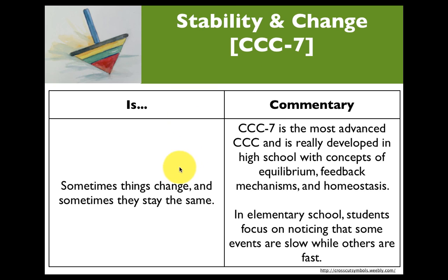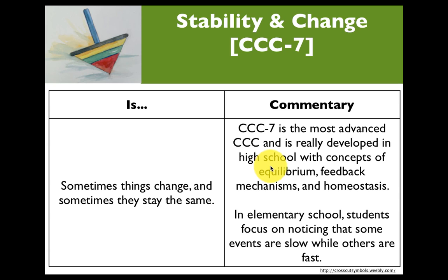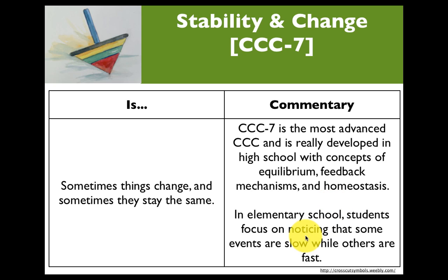Stability and change really boils down to: sometimes things change, and sometimes they stay the same. This cross-cutting concept is among the most advanced and is really developed in high school, where students deal with concepts of equilibrium, feedback mechanisms, and homeostasis. In elementary school, however, students are just focusing on noticing that some events are slow while others are fast.